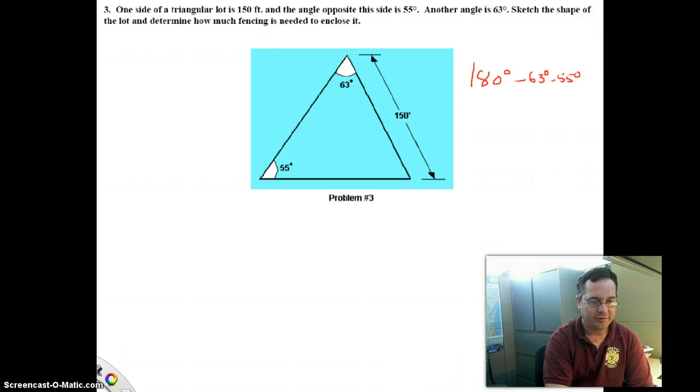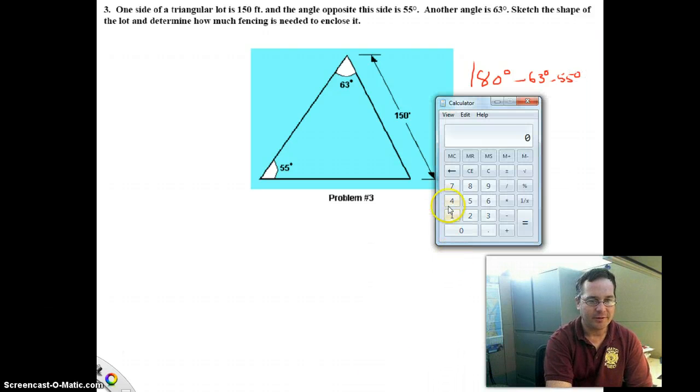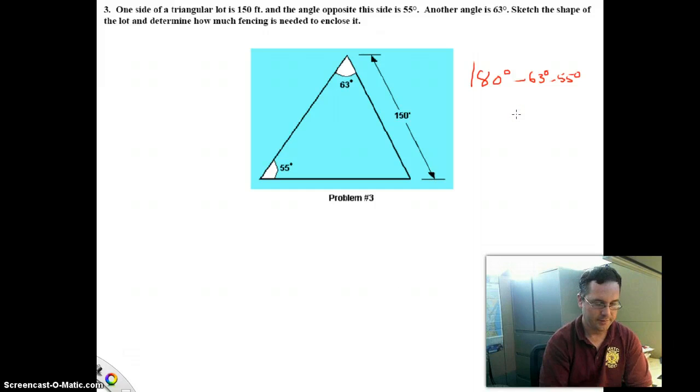So the calculation is 180 degrees minus 63 degrees minus 55 degrees. If we use our calculator to punch that up, it just becomes a simple calculation. 180 minus 63 minus 55, and you see we get an answer of 62 degrees. You can ask yourself, is that reasonable? It's clear that the remaining angle is less than 90, but it's not particularly acute. So 62 is a reasonable answer.